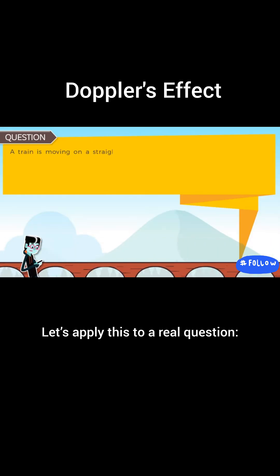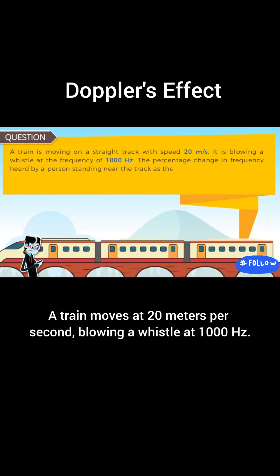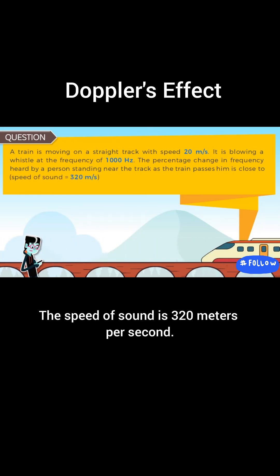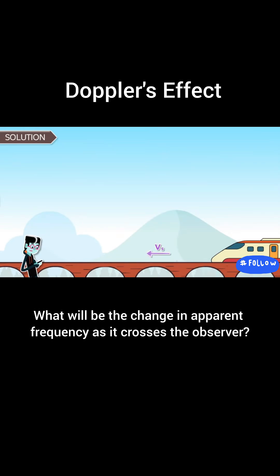Let's apply this to a real question. A train moves at 20 meters per second, blowing a whistle at 1,000 hertz. The speed of sound is 320 meters per second. What will be the change in apparent frequency as it crosses the observer?